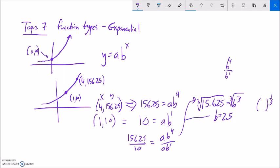So let me plug that back into this equation so I can find a. 10 is equal to a times 2.5 to the first power. Divide both sides by 2.5. And I get 4.